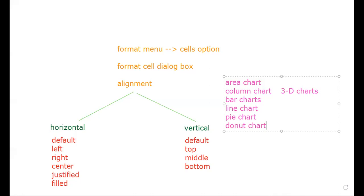Line chart shows trends in data at equal intervals. A column chart is used to represent a single data series. The XY chart, also called the scatter chart, is used to show relationships among numeric values, where X and Y values are plotted in the chart.